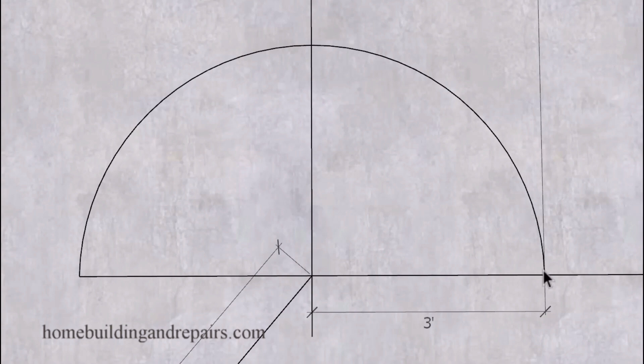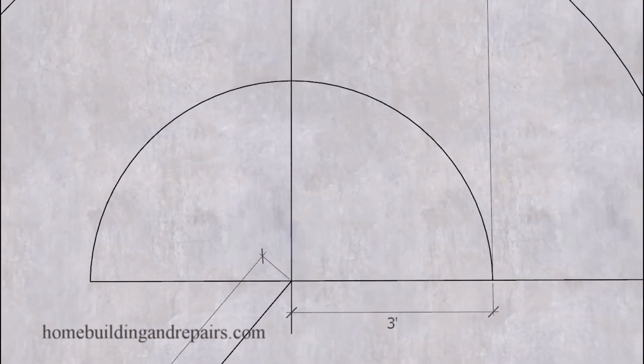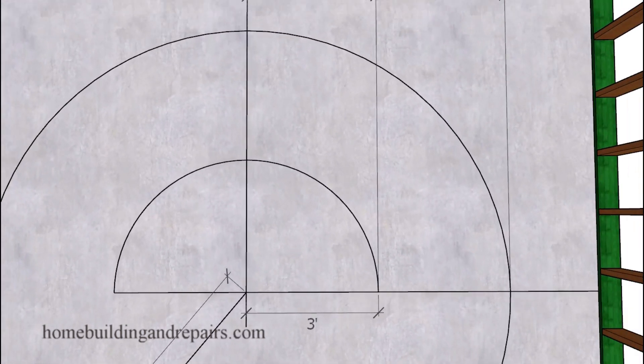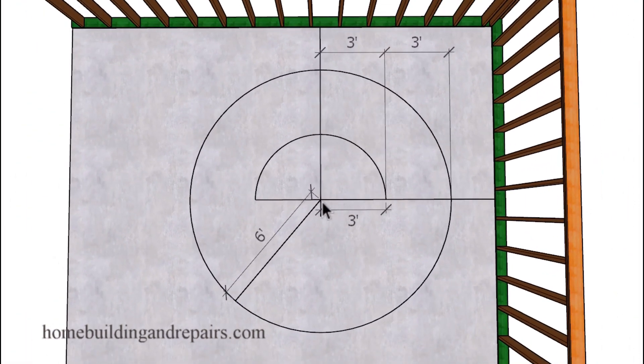This would be a half circle with a six foot diameter and a three foot radius. And if I wanted to make the stairway three foot wide, I'm simply going to add three feet to the inside radius. So I'm going to use a six foot radius, which again would be measuring from the center point to the outside of the circle. And there you have it.